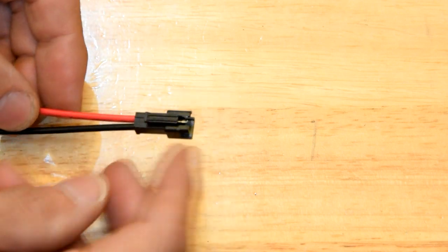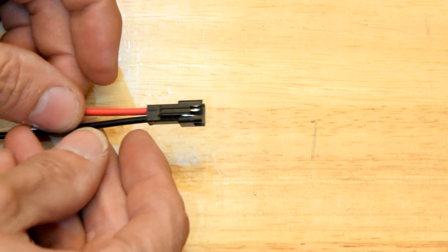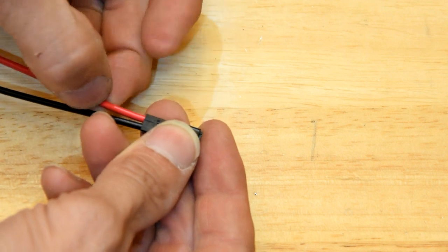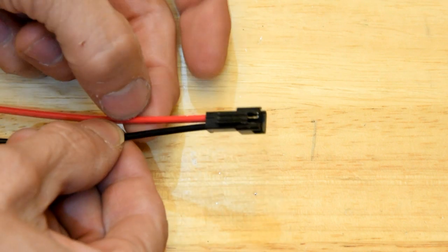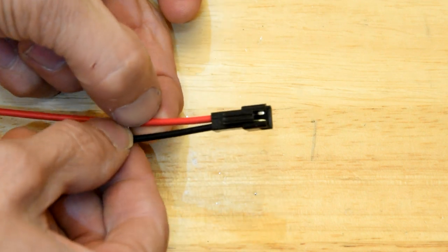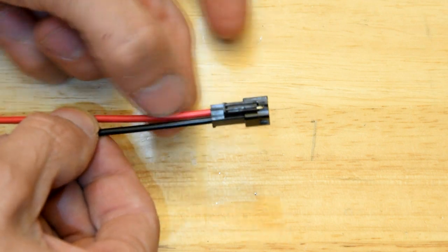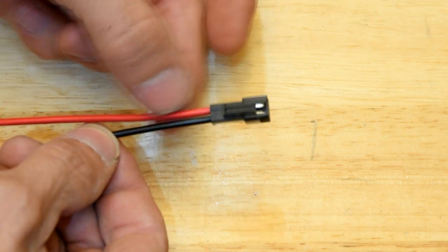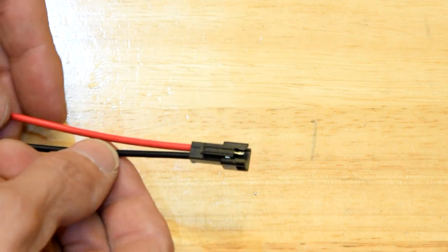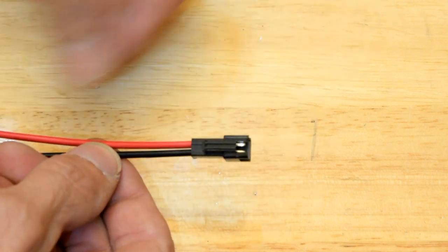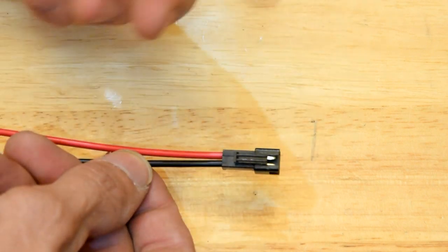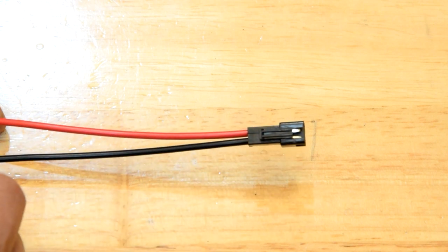If you ever need to do any work on these connectors, often you'll break this insulation, particularly if you own a J10, and you'll find that you might want to re-insulate that. Your options are either cut it, put some heat shrink on, re-solder it, and then heat shrink it.